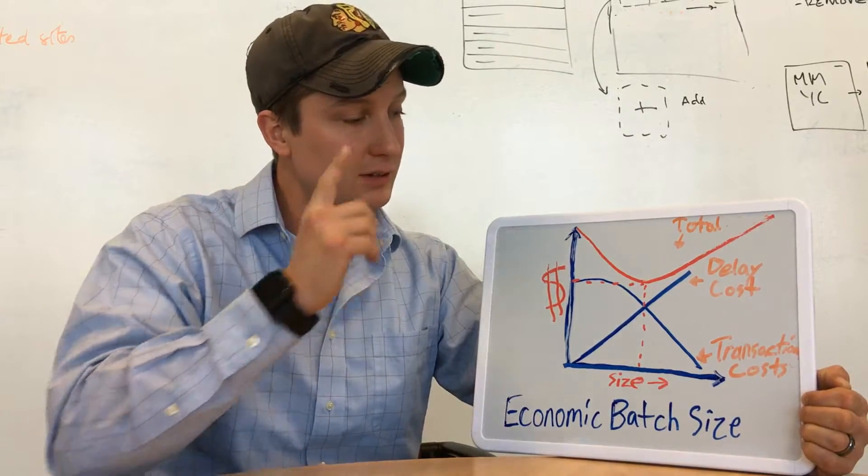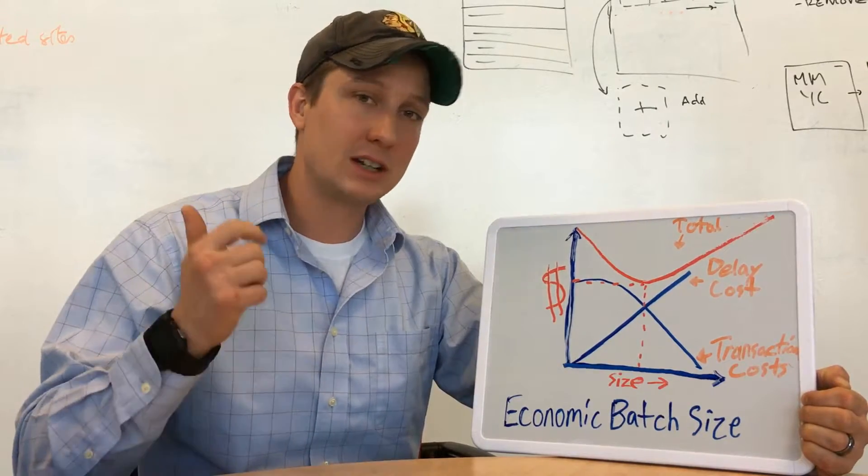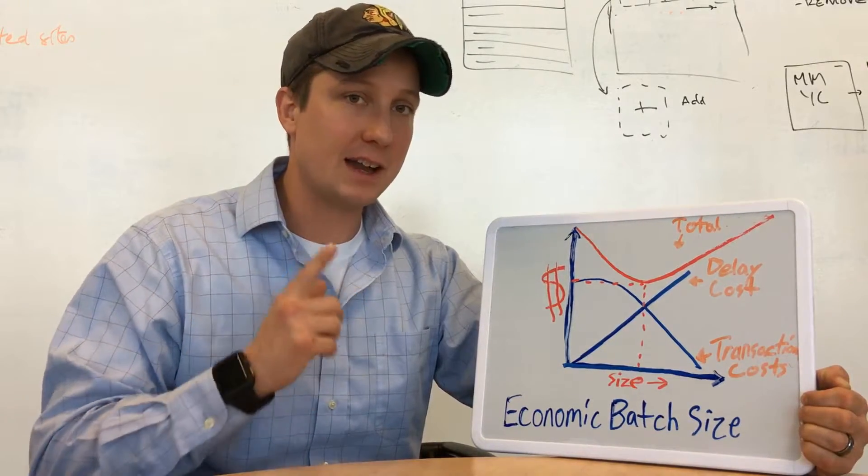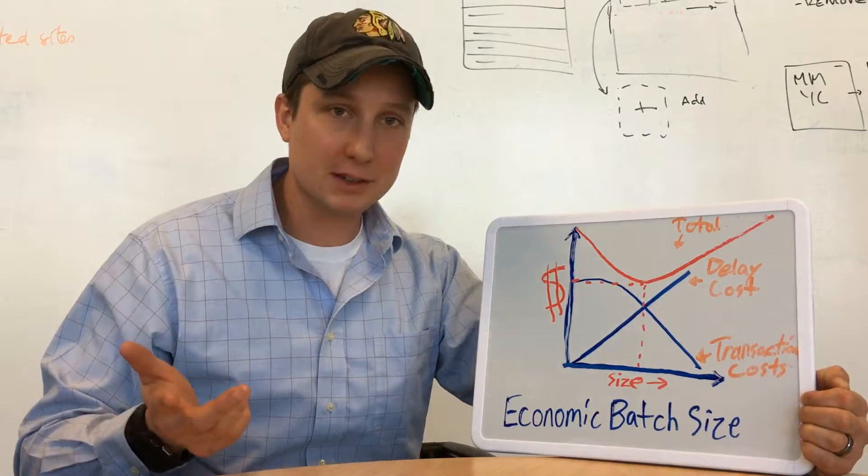Now, the best thing you can do is not only reduce batch size, but also reduce your transaction costs with DevOps and continuous delivery. That will make the optimum batch size so small you might even release every hour.